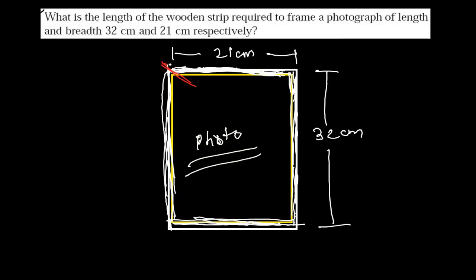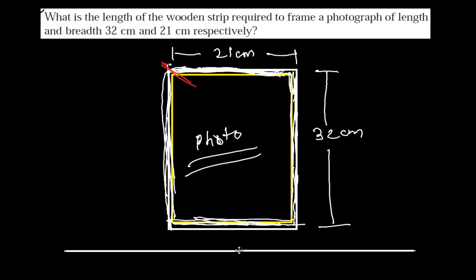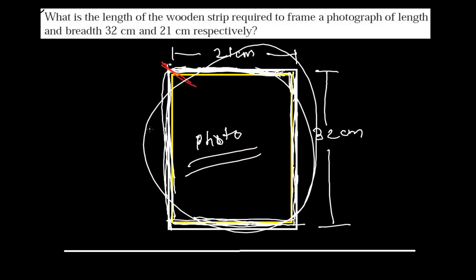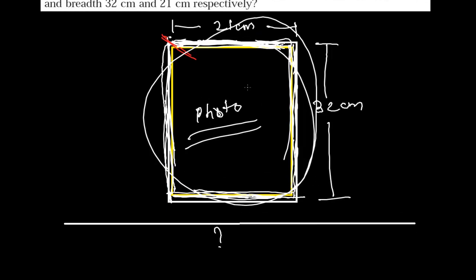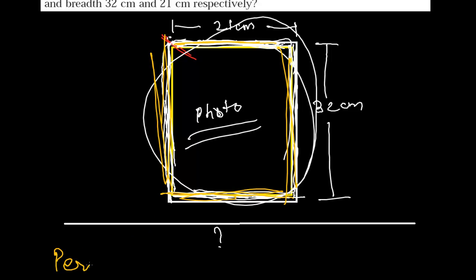What is the length required to make this whole wooden strip? Suppose if I cut this wooden strip, you'll get a very long wooden strip like this. What is the length of that wooden strip that will go around the whole photograph and make this frame? So we need to find out this length. We need this part, this part, this part, and this part — so it is just asking us the perimeter. What is the perimeter?